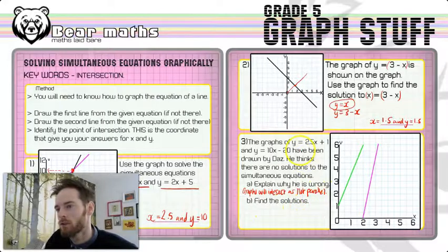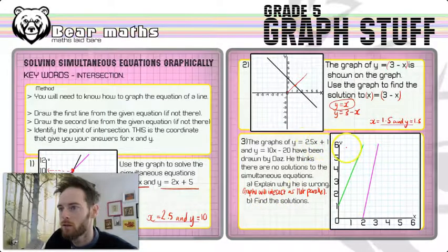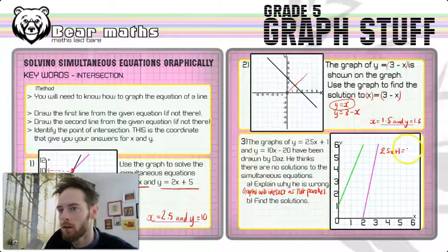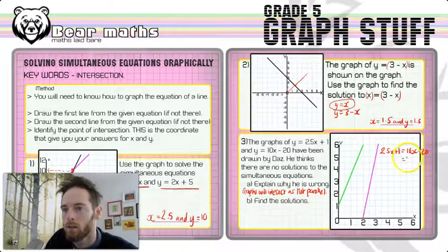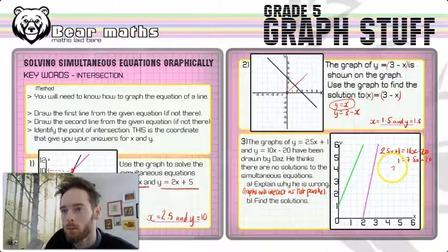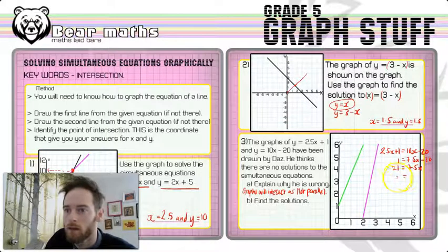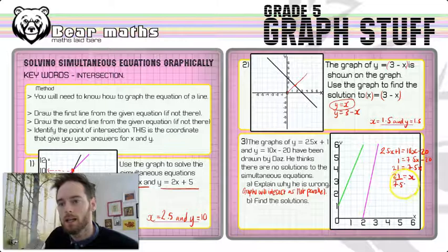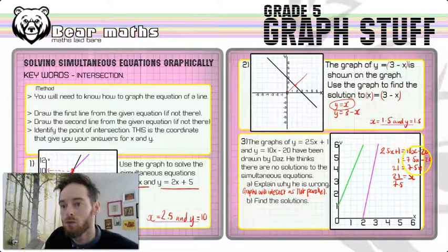And then it asks us to find the solutions. So what we do is we put them equal to each other. I might do that in this space over here because I don't think I need much room down there. So let's have a look at 2.5x plus 1. So 2.5x plus 1 is equal to 10x minus 20. So if we solve this, we're going to have to take away the 2.5x. So we're going to have 7.5x minus 20 on this side and 1 on this side. If we then add the 20, we've got 21 equals 7.5x. And then we've got to divide by 7.5 to get x on its own. So x is equal to 21 divided by 7.5. All this ability that I'm showing here is available for you to watch in better detail in the algebra section videos of how to solve equations with unknowns on both sides, three-step equations.